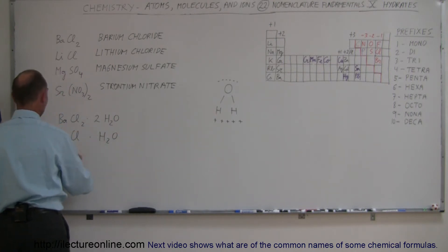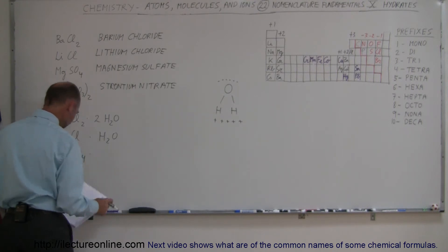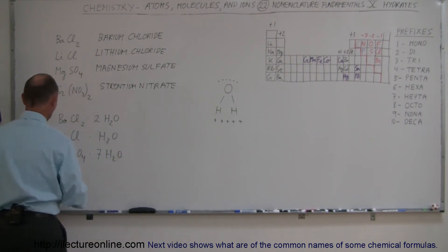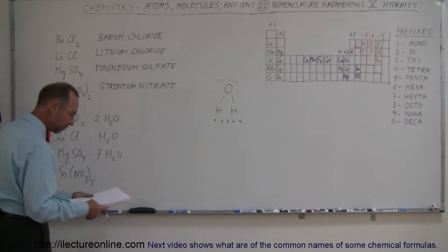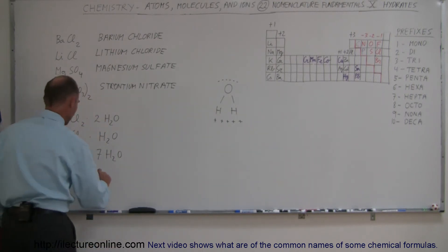And magnesium sulfate, or sulfate I should say, SO4, will bond with, I believe, seven. Yes, seven of these water molecules if enough water is present. And then the strontium nitrate will bond with four water molecules, 4H2O. And so what do we name those?